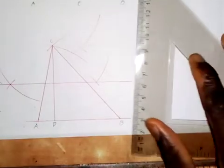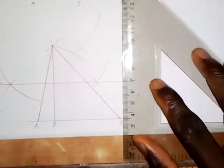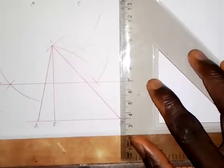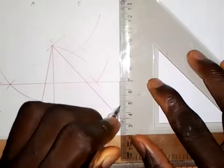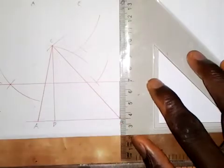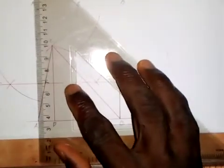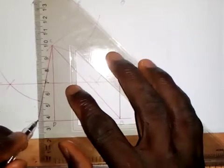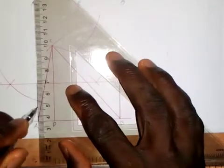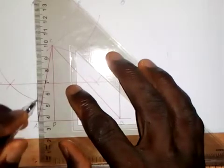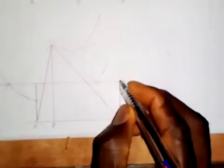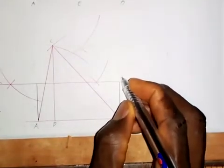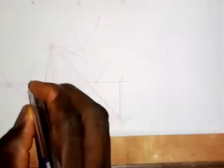Now I draw a vertical line from B meeting the bisector of CD at a point, and from A I draw a vertical line meeting the bisector at another point. These give us point E and point F respectively.